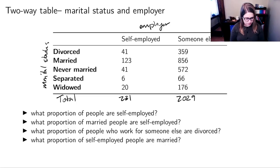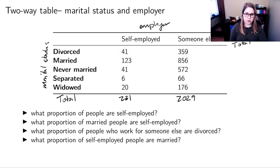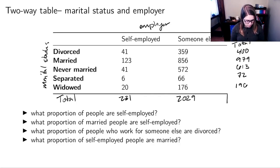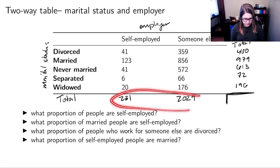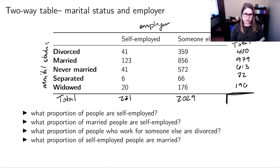We also need the totals for the rows — the total number of people who are divorced, the total number who are married, and so on. I'll work through and do those sums, and then I need one more grand total in the corner — the total from the whole data set. I got 2260.